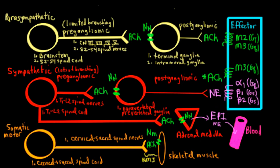Now let's turn our attention to the autonomic nervous system. We have the parasympathetic and sympathetic divisions, which we're going to be comparing. It's also good to include the somatic motor system, because it does share some similar features with the autonomic nervous system, even though it's not part of the autonomic nervous system. Let's start with the parasympathetic division.